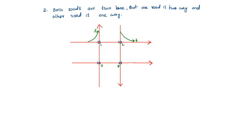Right-going traffic — only two right-going movements are there. Conflicts: seven, eight, and merging nine, ten, eleven. So total conflicts are only 11 numbers.